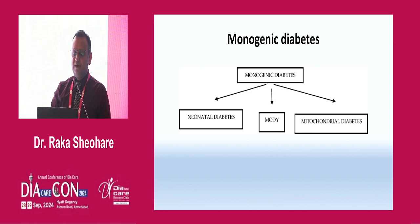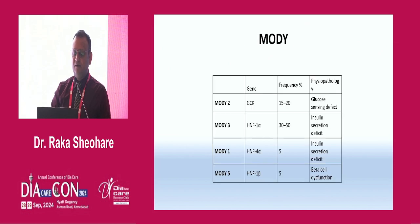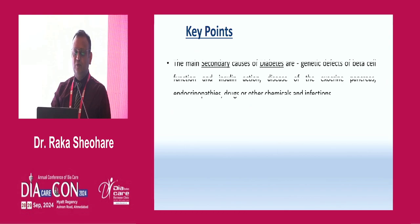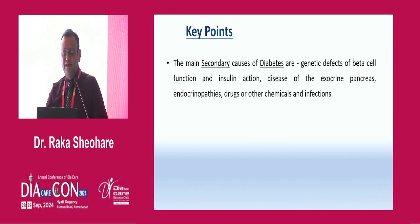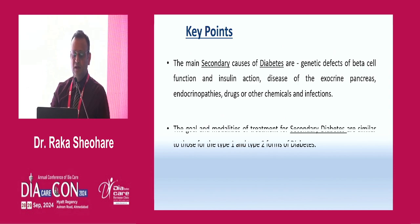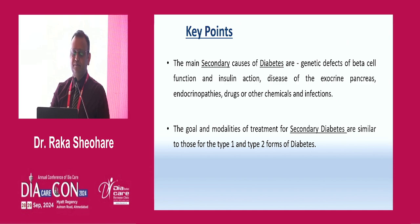Monogenic diabetes includes neonatal diabetes, MODY, and mitochondrial diabetes. MODY has different classifications, which is a separate subject. Key points: the main secondary causes of diabetes are genetic defects of beta cell function, insulin action, disease of the exocrine pancreas, endocrinopathies, drugs, chemicals, or infection. The goals and modalities of treatment for secondary diabetes are almost similar — most endocrinopathies require surgery, while type 1 and type 2-like presentations are managed with drugs and insulin.